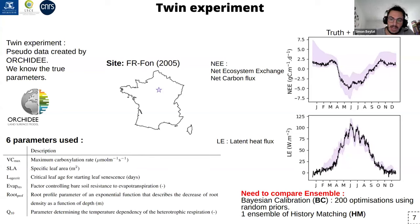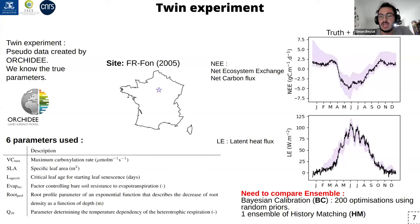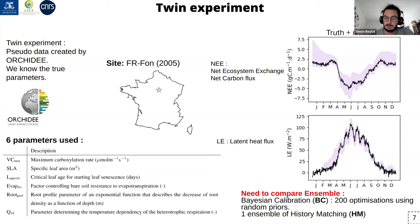Since Bayesian calibration is deterministic and we work with ensembles using history matching, we performed 200 optimizations using different priors and compared the results with 200 points taken from the NROY space for history matching.